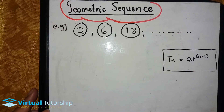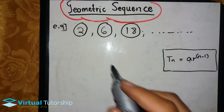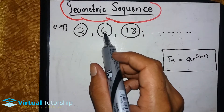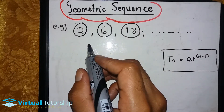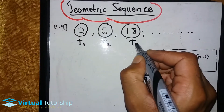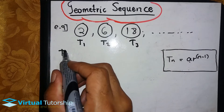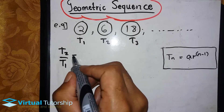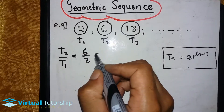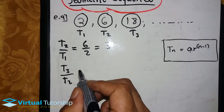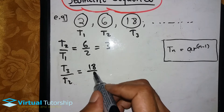Now I'm going to show you the geometric sequence. Here is an example: we have 2 and 6. This is the first term, the second term, and the third term. We are going to show you the second term divided by the first term: 6 over 2 equals 3. We are going to show you the third term divided by the second term, and it's still 3.